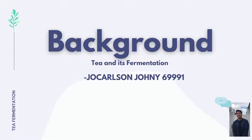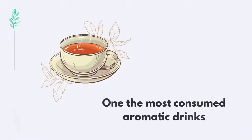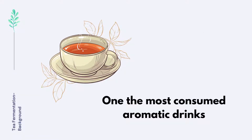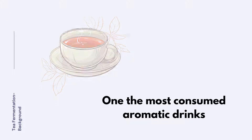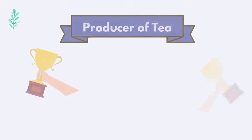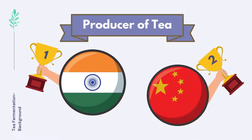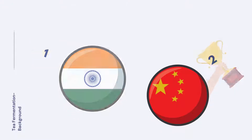In this part, I'm going to be explaining the background of tea and its fermentation. Tea is one of the most consumed aromatic drinks, besides water. People from all over the world drink tea, where India is the largest producer of tea and the second largest producer is China.